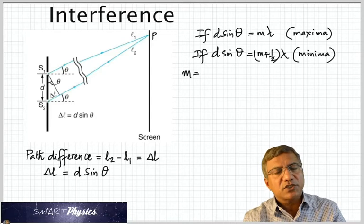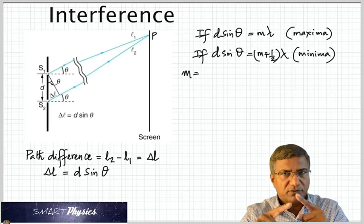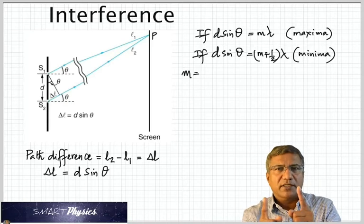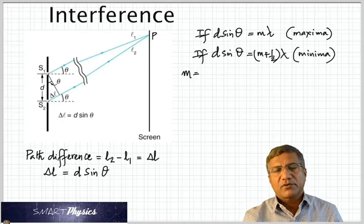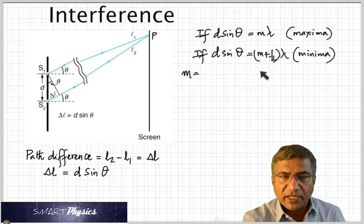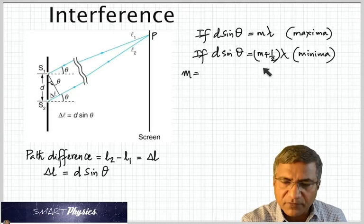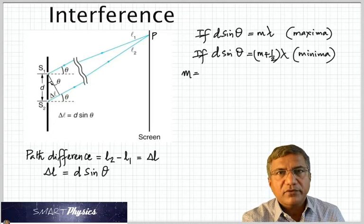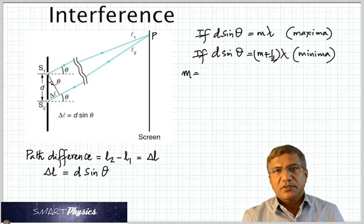Now in this case, you know it should be a crest falling on a trough. So they cancel out. And what is the distance between a consecutive crest and a trough? It's half a wavelength. So that's why if you give M the value 0, you're going to get half lambda. If you give M the value 1, you're going to get 1 plus half, 3 by 2 lambda.